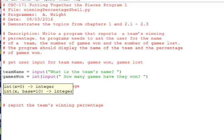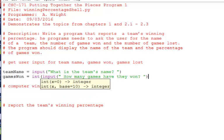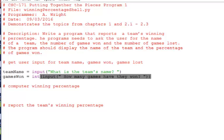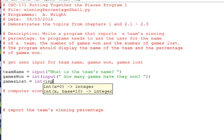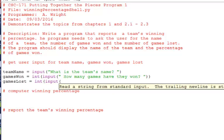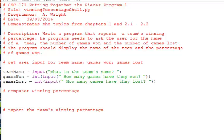And then we need the games lost. Again, this is an integer, so we need to direct Python to translate that string input into an integer. Remember to use two parentheses at the end: one to close the input function, the other to close the int function. That's all of our inputs.